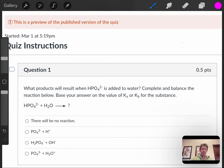Alright, so for this particular problem, it says what products will result when HPO4^2- is added to water? Complete and balance the reaction below. Base your answer on the value of Ka or Kb for the substance.